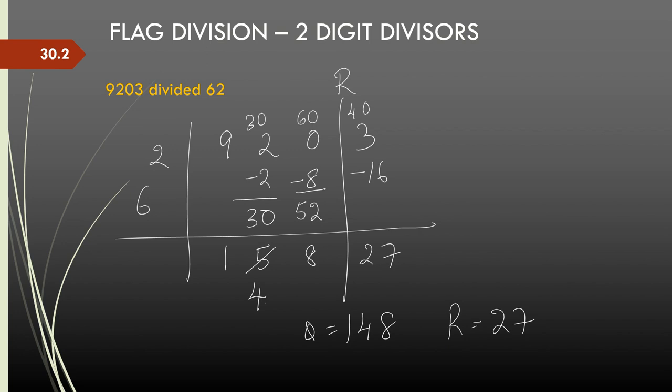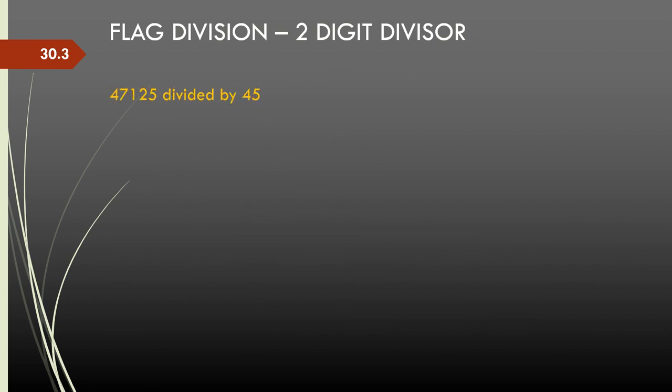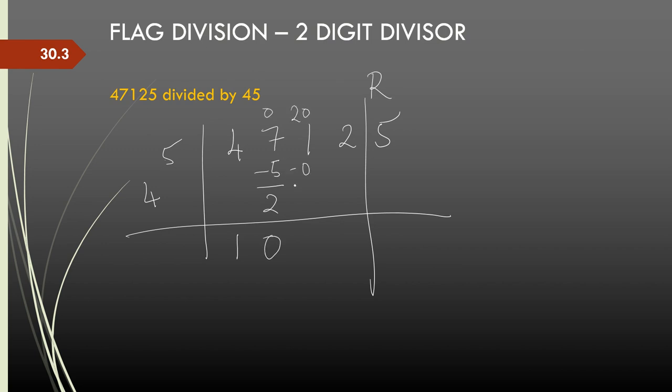One more example, just to make the process clear. If I was dividing 47125 by 45. One flag digit, one digit from the right is the remainder line. I start dividing 4, 1s are 4. No carry forward. Adjustment is 5 into 1 minus 5. That is 2. 4 0s are 0 and 2 carry forward as 20. Adjustment is 5 into 0, 0. 5 into 0 becomes 0, this is 21.